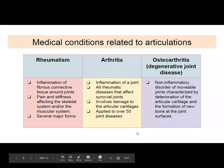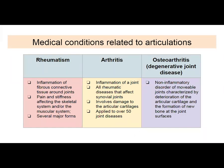Medical conditions related to articulations include rheumatism, which involves inflammation — redness and swelling around the fibrous connective tissue surrounding the joints. You get pain and stiffness, and it affects both your skeletal system and could also affect your muscular system. There are lots of different kinds of rheumatism. Arthritis is another form of inflammation, and these rheumatic diseases typically affect synovial joints.